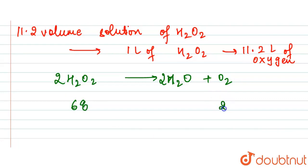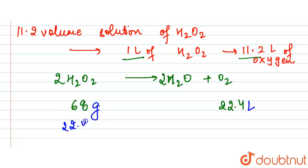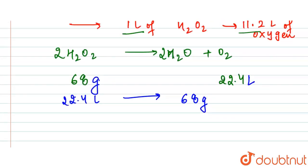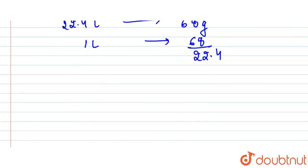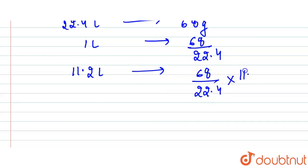Since two moles of H₂O₂ (68g) produce 22.4 liters of O₂, we can scale the calculation. If 22.4 liters is produced by 68 grams, then 1 liter is produced by 68/22.4 grams. Therefore, 11.2 liters of O₂ corresponds to (68/22.4) × 11.2 = 34 grams per liter.